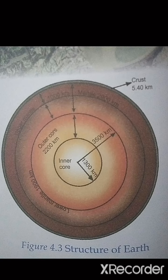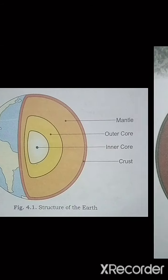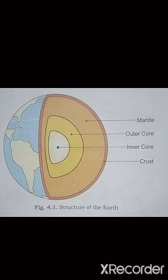When we peel an onion, it has many layers. Like that, the earth is also constituted of many layers. The more important layers of the earth are: the crust, the outermost layer; below the crust lies the mantle; and the inner layer is known as the core. We will study the composition, thickness, temperature, and density of each and every layer.